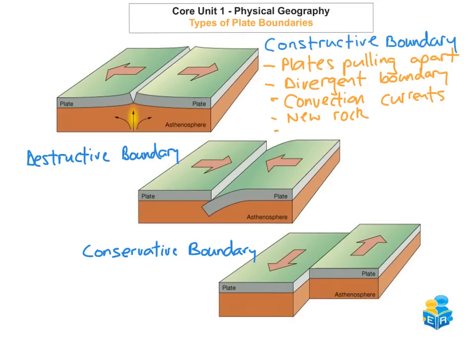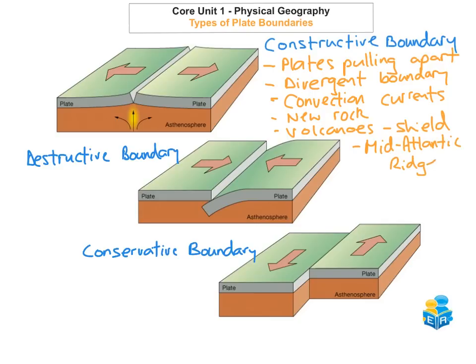You get volcanoes at constructive plate boundaries, and these are usually shield volcanoes. An example of where this happens is the Mid-Atlantic Ridge. Iceland is a good example to use because the Mid-Atlantic Ridge runs straight through Iceland, and Iceland has lots of volcanoes — lots of shield volcanoes — and lots of new rock has been formed there.